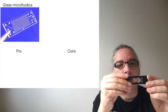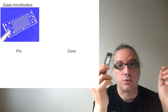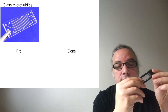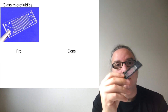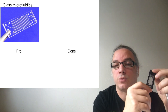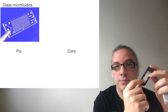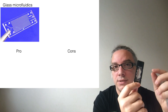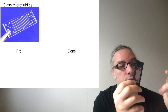Glass microfluidics are extremely stable to solvents — you can use organic solvents — and they can be super small. The problem is that you can rarely make them in the lab. Usually you just buy them, and if you want a special design you need to send it to someone who can produce them. It will take a couple of weeks if not more, and they are extremely expensive because they have to produce it for you. So if you want your own design, this is not the way to go.